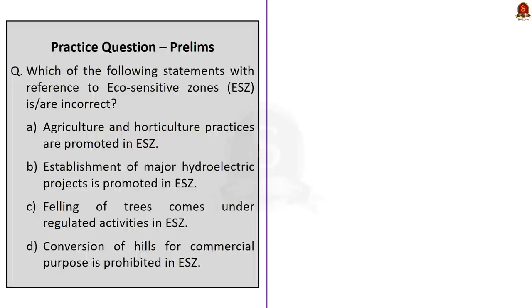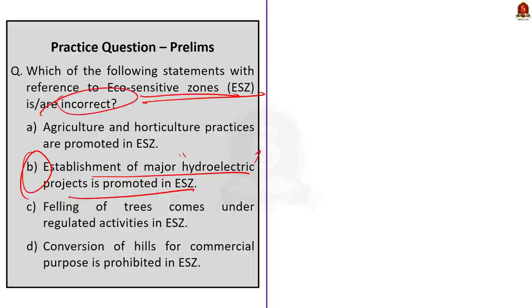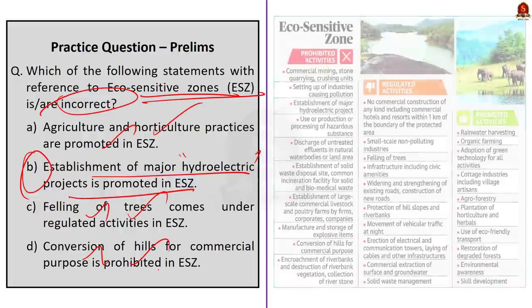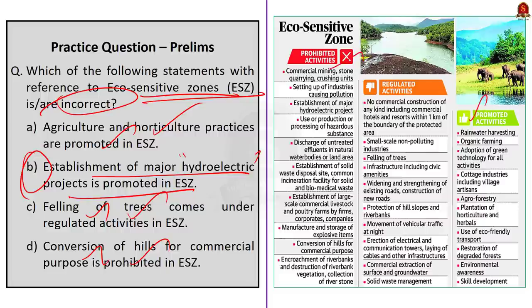The first practice question is on eco-sensitive zones. The answer is option B — 'the establishment of major hydroelectric projects is promoted in the eco-sensitive zone' — because this is the incorrect statement. Options A, C, and D are correct. We clearly discussed what is allowed, prohibited, and regulated in the eco-sensitive zone. The activities image is displayed again for reference — please go through it carefully as a prelims question is very likely from this area.